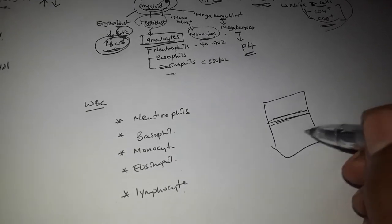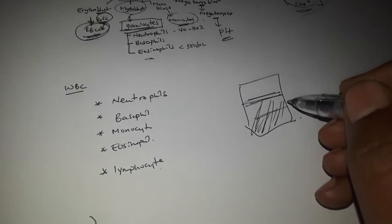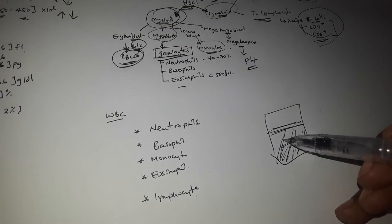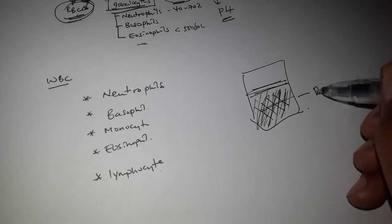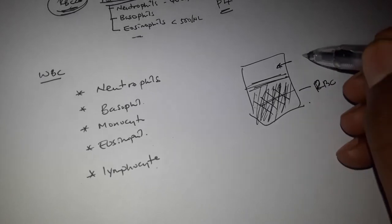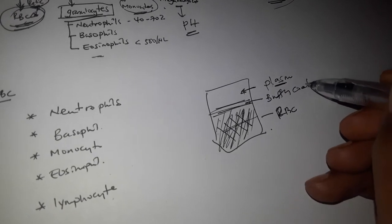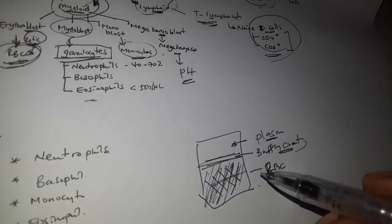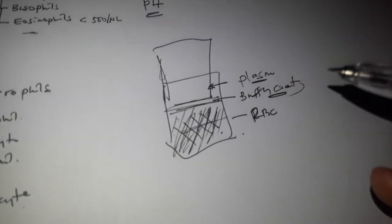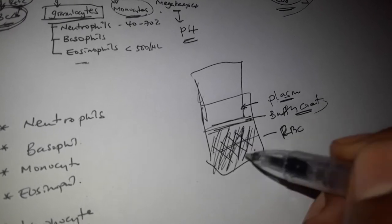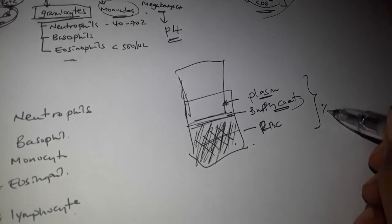We use a centrifuge to separate blood into its component portions — the sediment and the plasma. The blood product is made up of red cells, white cells, and plasma. These layers are the main components visible after centrifugation.